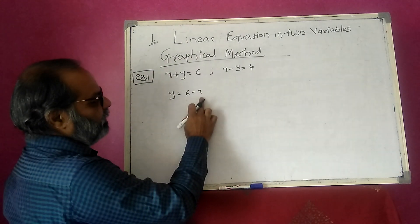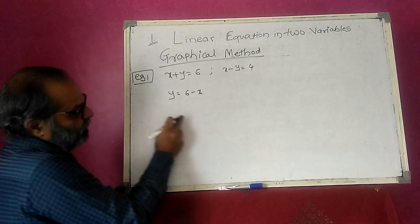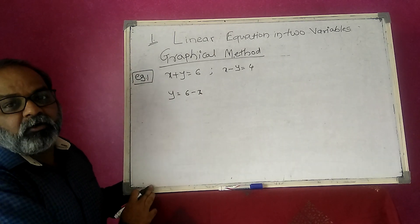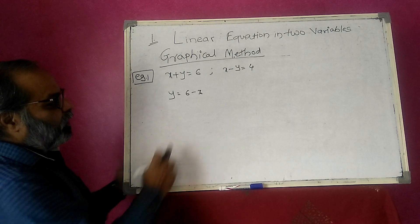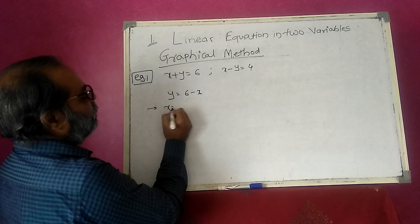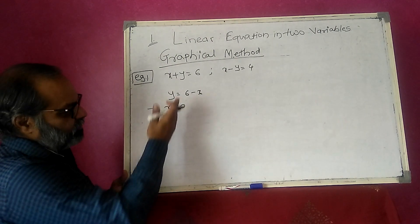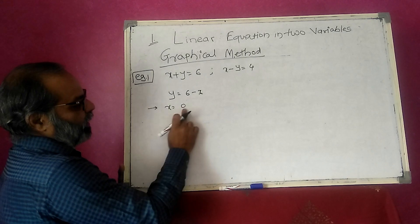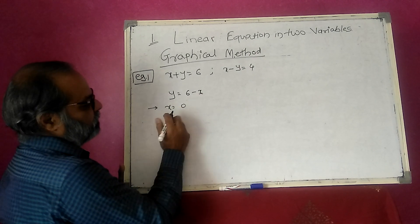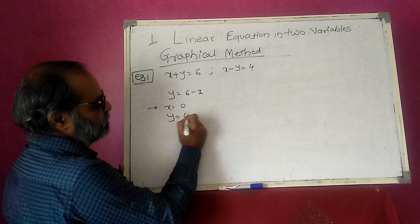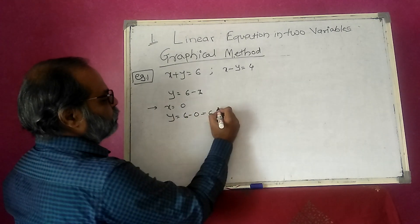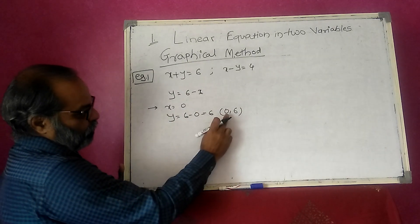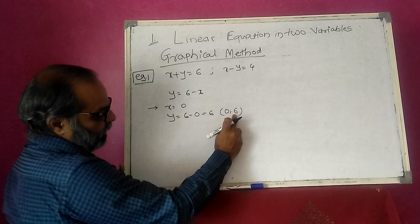Now take any three convenient values of x and find the value of y. The x-comma-y pair is the coordinate to plot a graph of this line. I just take x is equal to 0, so y is equal to 6 minus 0, that means 6. So my first point is (0, 6).